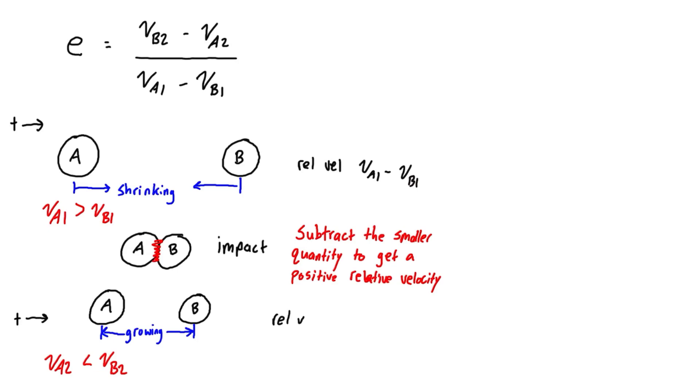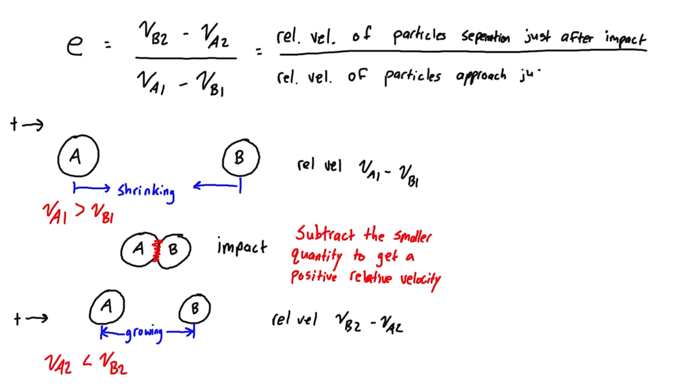And on separation, the relative velocity is going to be v_b2 minus v_a2, and that's exactly what you're seeing up here: v_b2 minus v_a2 and v_a1 minus v_b1. So that's just the relative velocity of the particle separation just after impact over the relative velocity of the particles approach just before impact.